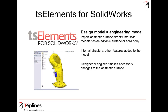So what TS Elements for SolidWorks does is it lets the design model actually be the outer aesthetic surface of the engineering model. Using TS Elements for SolidWorks, you can import the aesthetic outer surface of your design directly into SolidWorks as an editable surface or a solid body. Then the internal structure and other features can be added to the model, and when the inevitable changes need to be made to the design, either the designer or the engineer can make the necessary changes to the aesthetic surface by simply pushing and pulling on it.